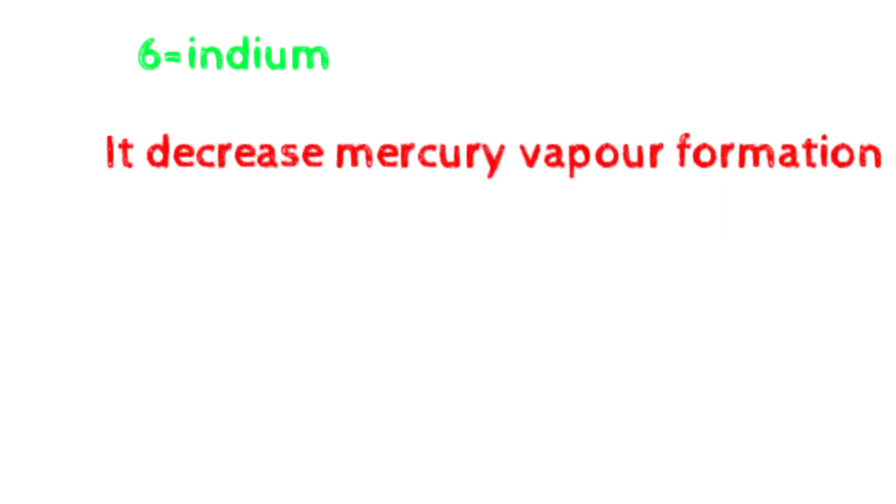In major constituents, the first constituent is silver, which is 65 percent in amalgam alloy. Second is tin, which is 29 percent. And third is copper, which is less than 6 percent in low copper content alloy, and 6 to 30 percent in high copper content alloy.